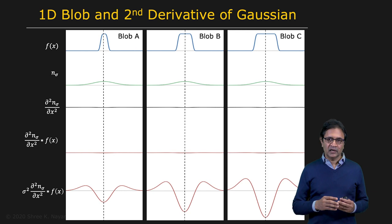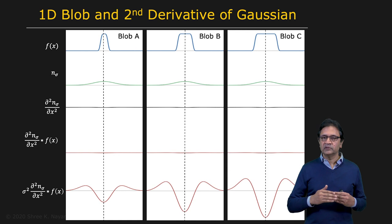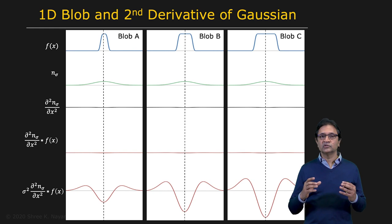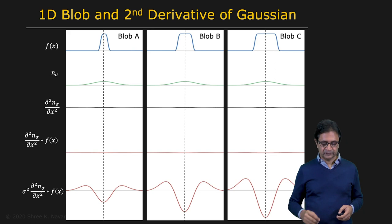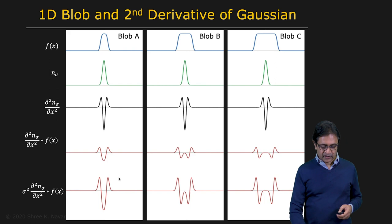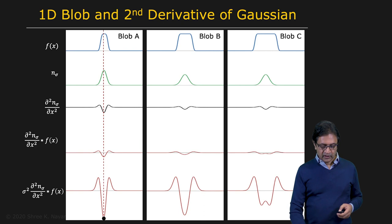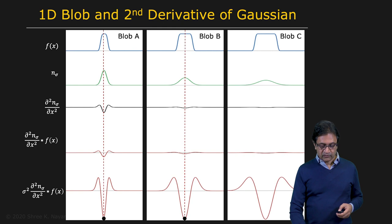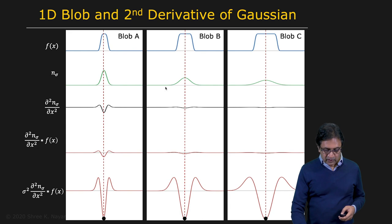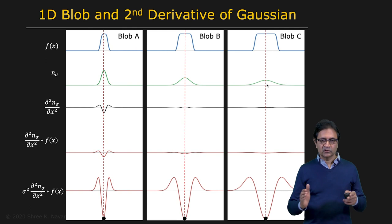This hints at what we need to do. We're going to apply the second derivative of the Gaussian at multiple sigmas — a large number of sigmas — where sigma is referred to as scale. Irrespective of the size of the blob, you're going to sooner or later produce a maximum at the location of the blob at some scale. Note that the sizes of these Gaussians appear to be proportional to the widths of the blobs themselves — that's an important thing.